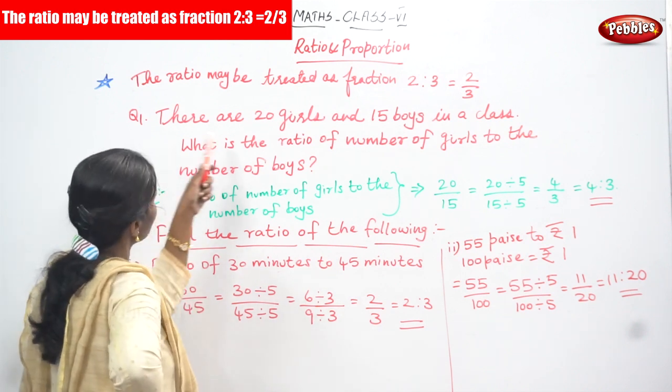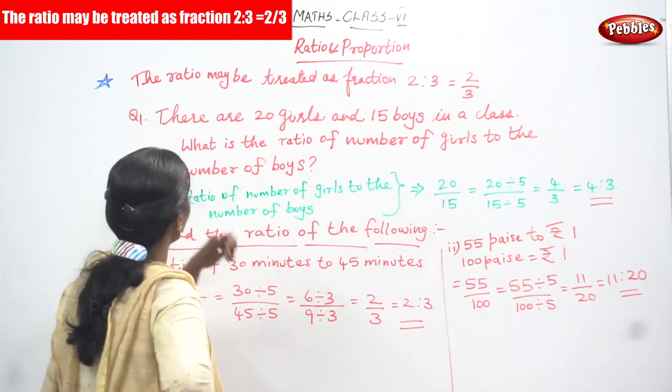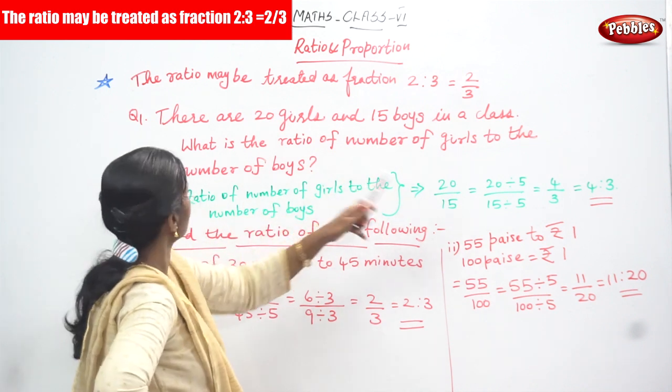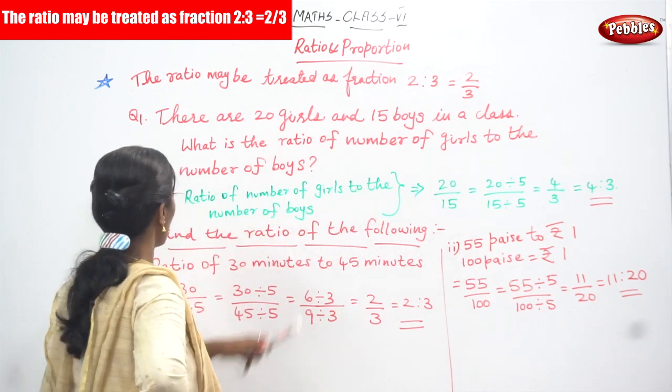First question: there are 20 girls and 15 boys in a class. What is the ratio of the number of girls to the number of boys?